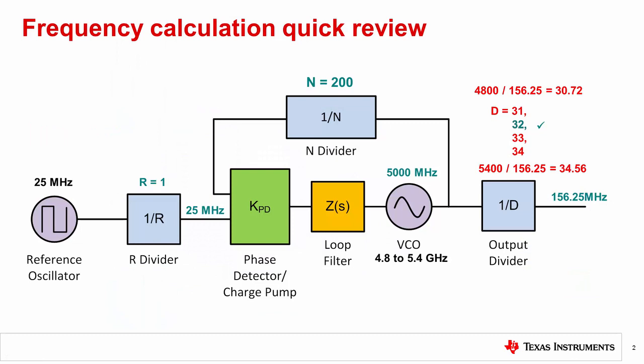First, let us quickly review what we learned in Frequency Planning Part 1. Output frequency is calculated by VCO frequency divided by output divider. VCO frequency is equal to phase detector frequency multiplied by the fractional N divider. Sometimes there are multiple VCO frequencies to choose from — how do we decide which VCO frequency to use?